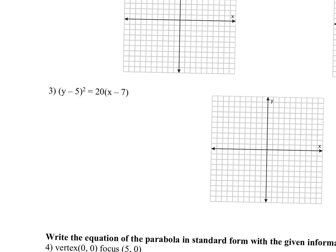So I can go ahead — this is the longer one — and my vertex here: k is always with y, and h is always with x. So my vertex of the parabola is (7, 5).